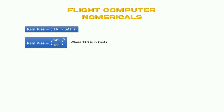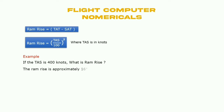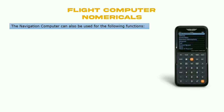Ram rise equals total air temperature minus static air temperature. The formula is: ram rise = (TAS / 100) squared. For example, if TAS is 400 knots, ram rise is 16 degrees Celsius if you put that value into the formula.